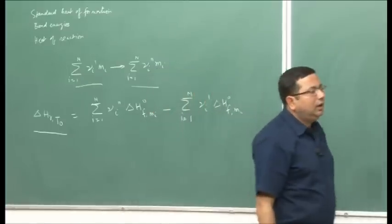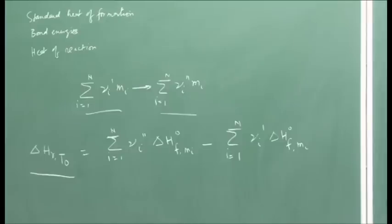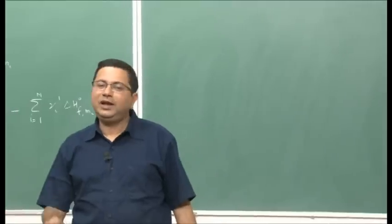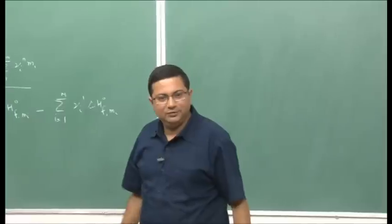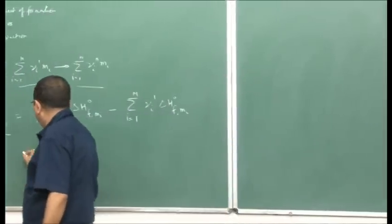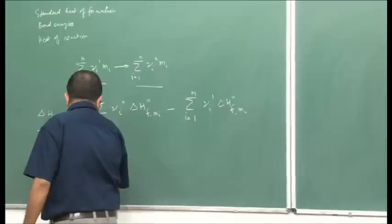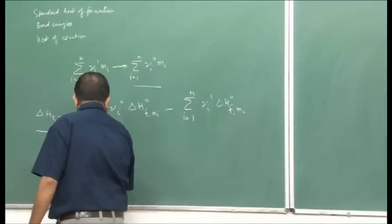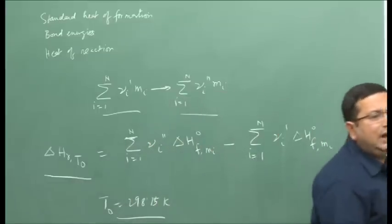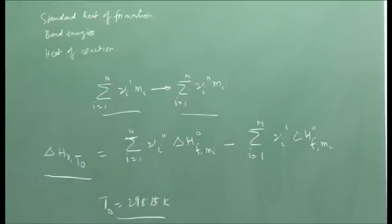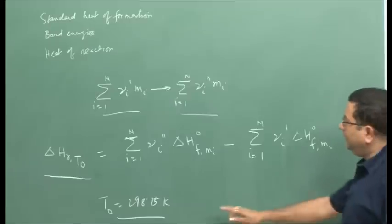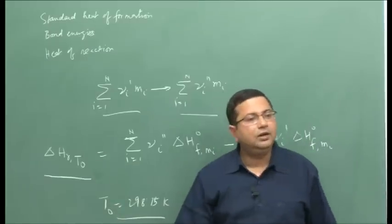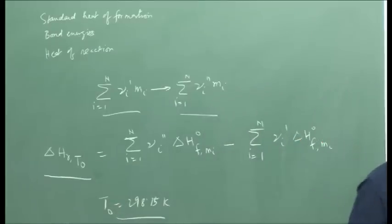Very rarely — actually, almost never — will the reaction actually occur at the standard temperature of 298 Kelvin. Most of the time the reaction will be occurring at some other temperature, typically higher temperature. So the question arises: if the temperature is different from the standard temperature, how do we estimate the heat of reaction?